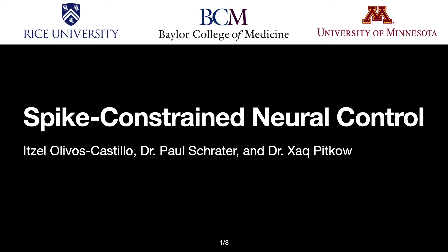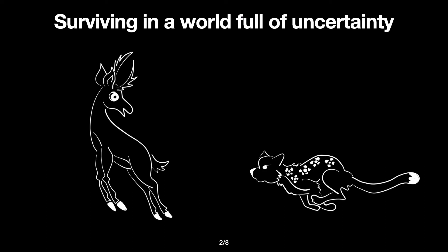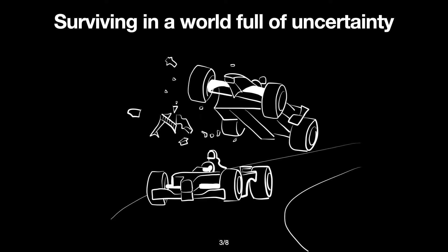The brain possesses impressive skills that allow us to survive in a world that is highly uncertain and continually changing. Consider a deer that escapes from a hungry predator, or an F1 driver escaping an accident to win the race.